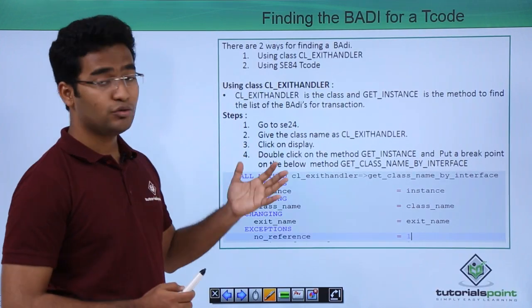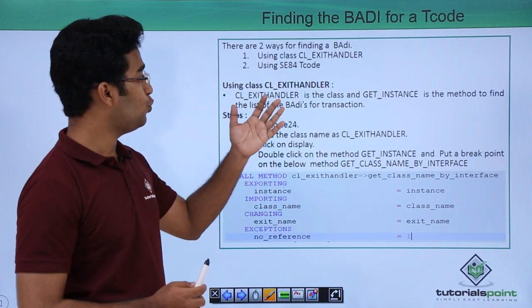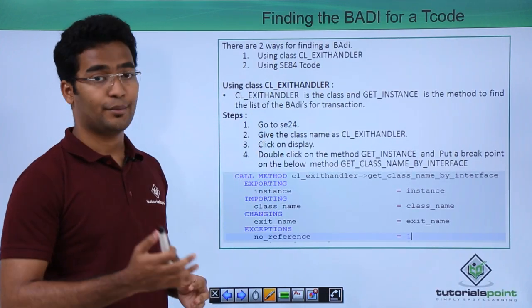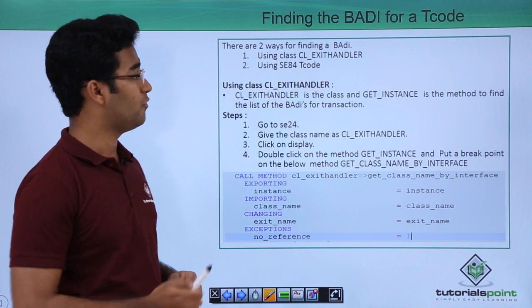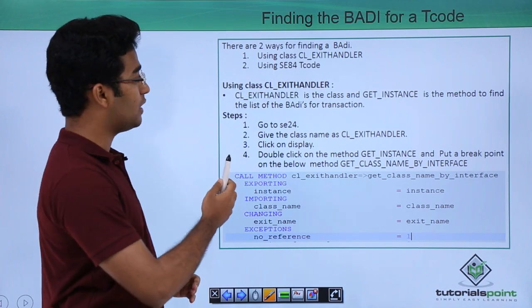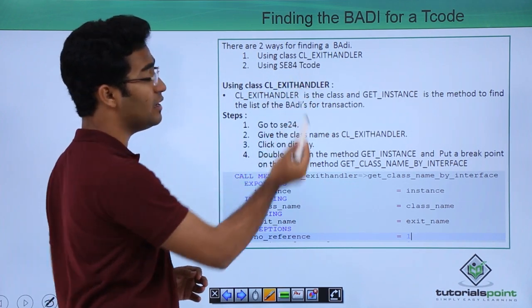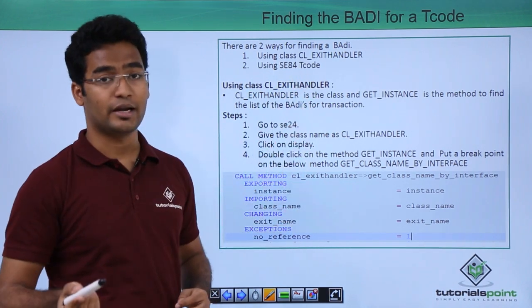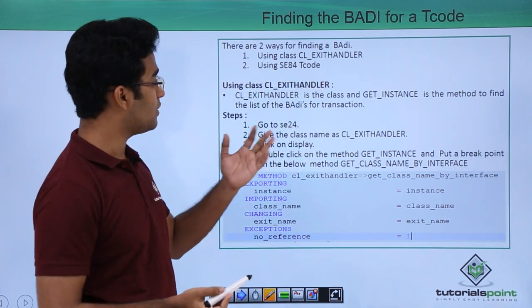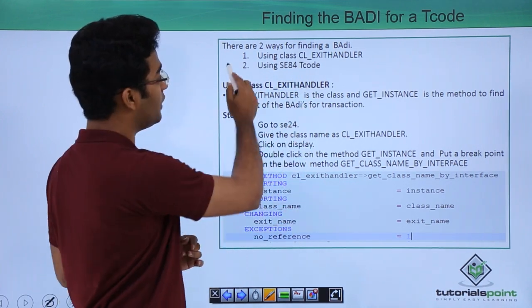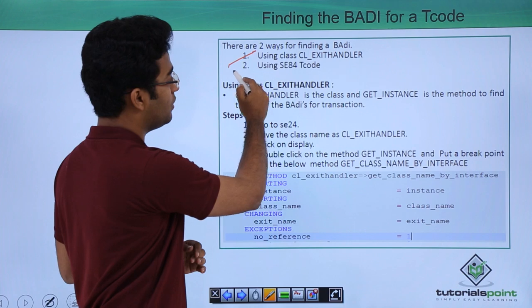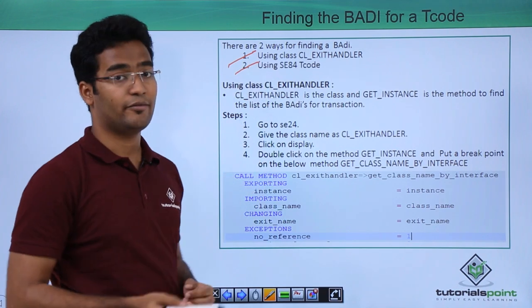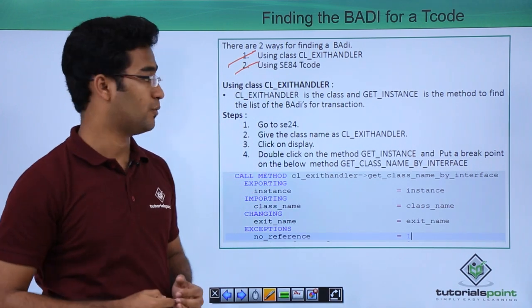There are two ways to find a particular BAdI. One is using the class CL_EXIT_HANDLER, and the other way is using the SE84 transaction code.